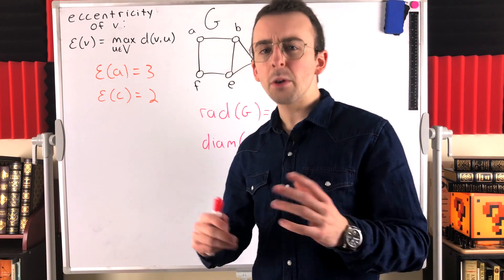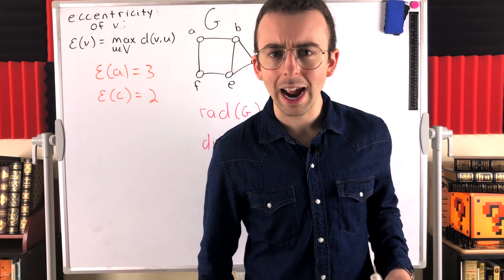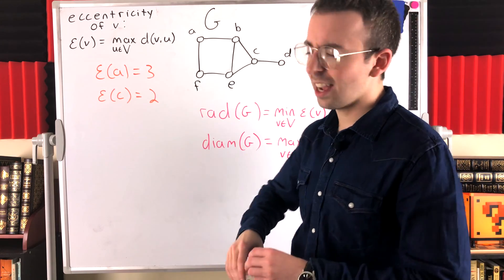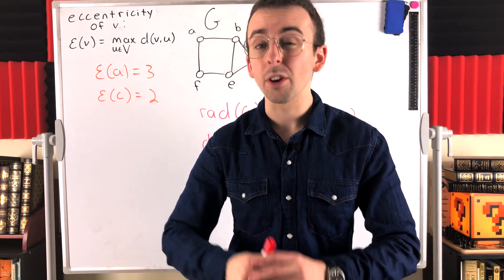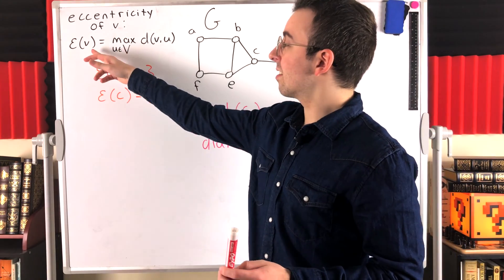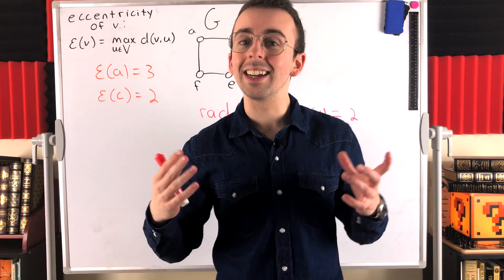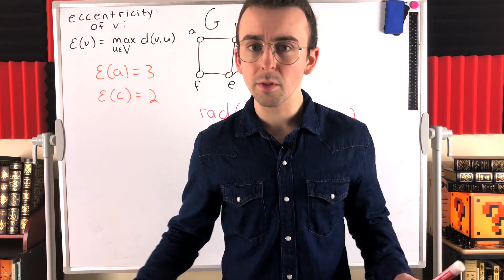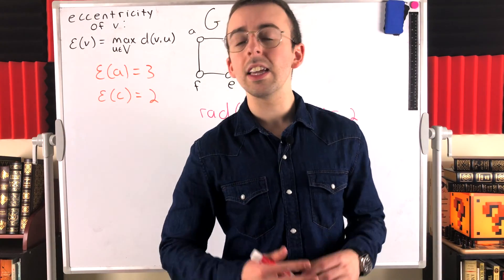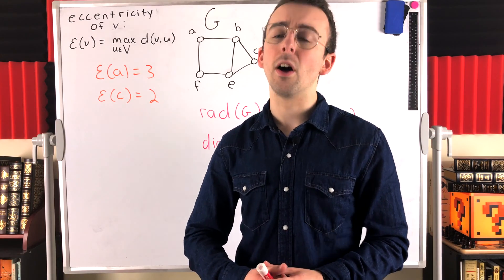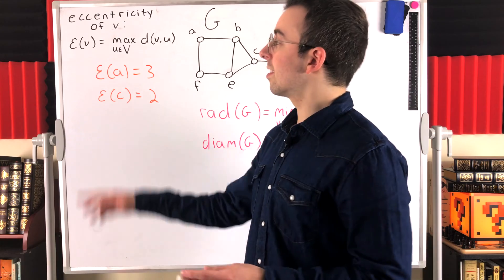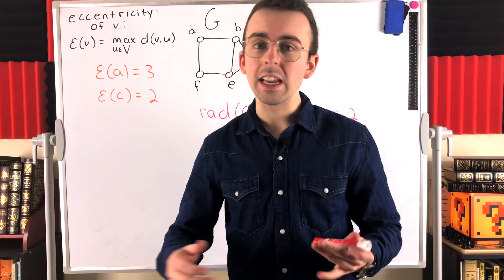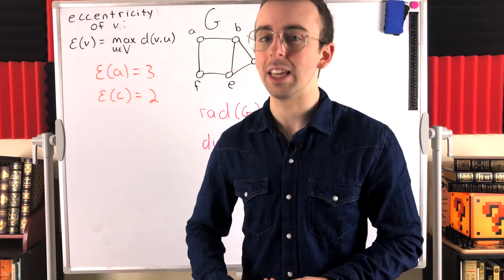One other thing you might be wondering is how does eccentricity work in disconnected graphs? Remember that the eccentricity of a vertex is based on the distances between that vertex and all other vertices in the graph. If the graph is disconnected, how eccentricity is defined depends on how we define the distance between disconnected vertices. If we say that distance is undefined, then the eccentricity will also be undefined. If we say that distance is infinite, then the eccentricity will also be infinite.